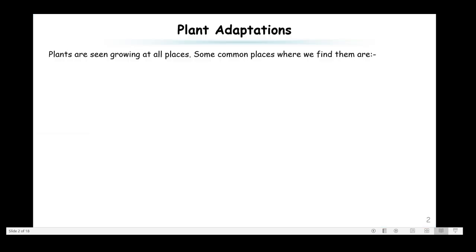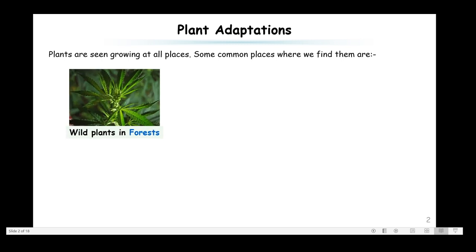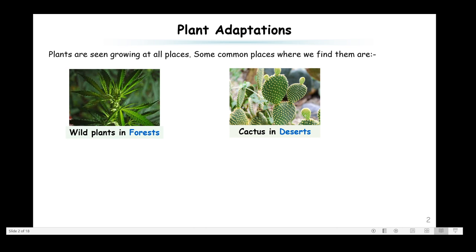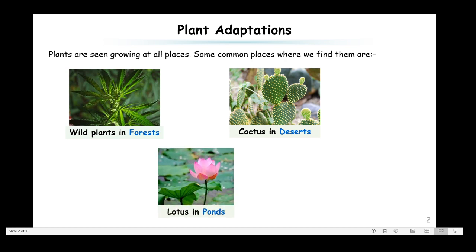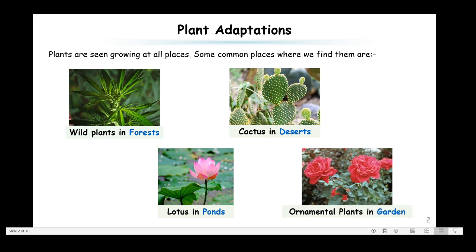Adaptations in plants. Not all plants are seen growing in all places. Some common places where we find them are forests — wild plants are found in forests, cactus is found in deserts, lotus is found in ponds, and ornamental plants are found in gardens. The main thing to observe here is that different plants grow in different climatic conditions, and they differ in their shape and size. Some bear thorns, some have a soft look, some have a fleshy stem. They grow in different places depending upon the climatic conditions.